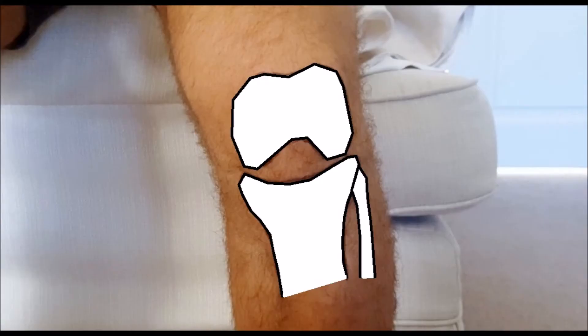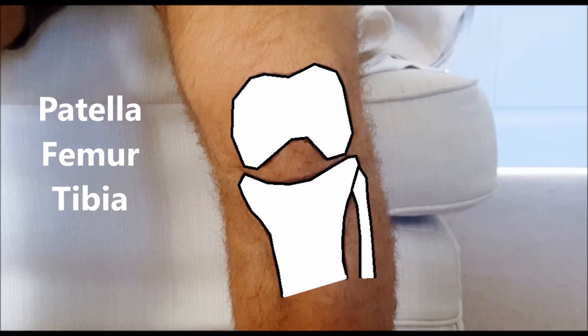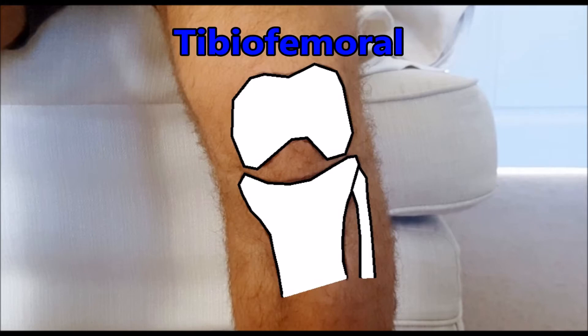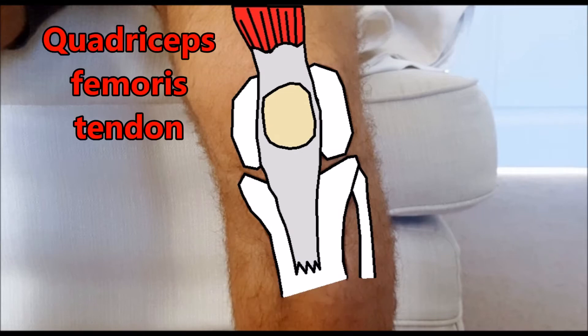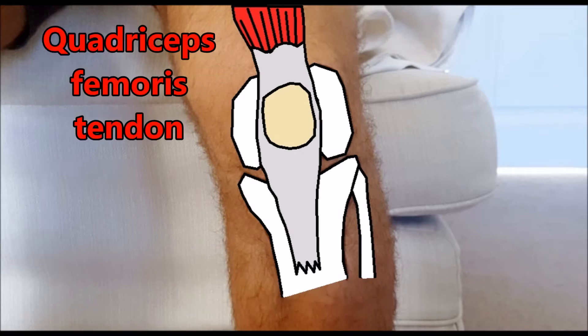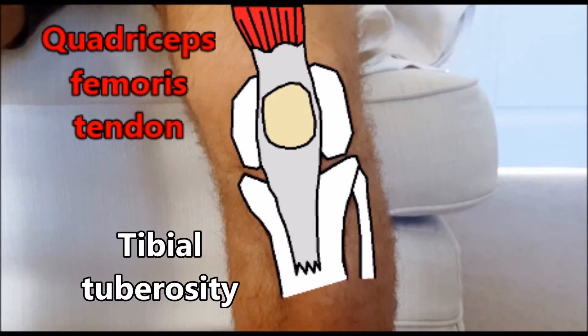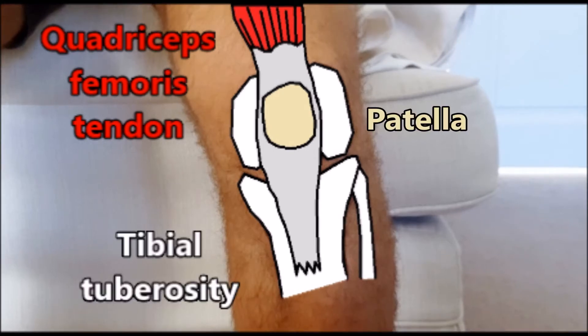The knee is a bicondylar type synovial joint. It is formed by articulations between the patella, femur and tibia. It consists of two articulations: the tibiofemoral, which is the weight bearing point of the knee, and the patellofemoral. This forms part of the quadriceps femoris tendon, which attaches onto the tibial tuberosity, and the patella lies inside the tendon.